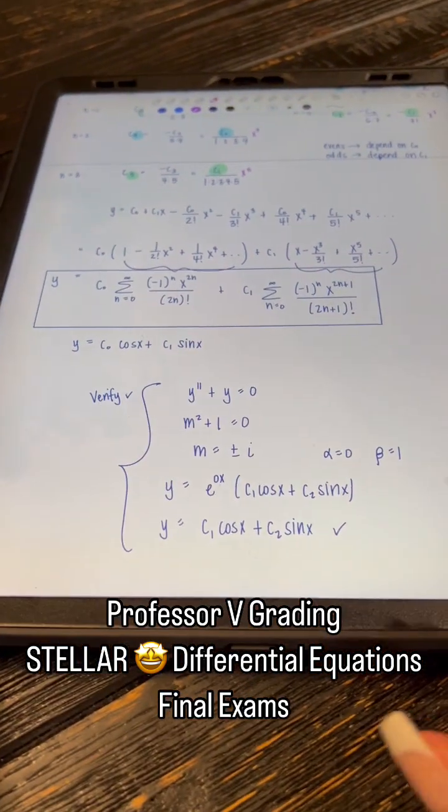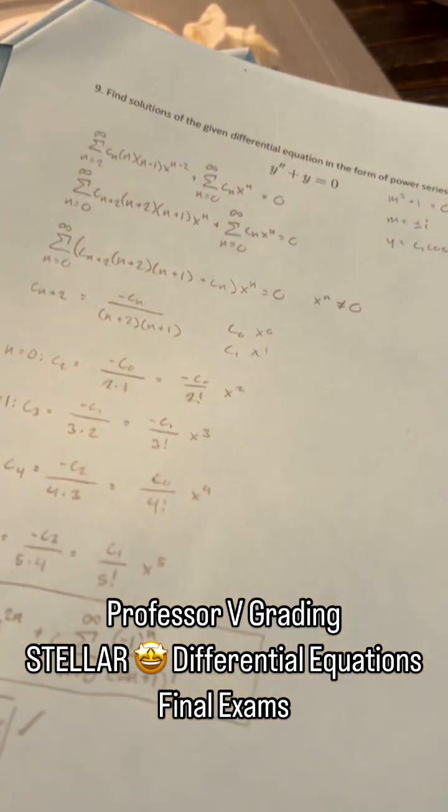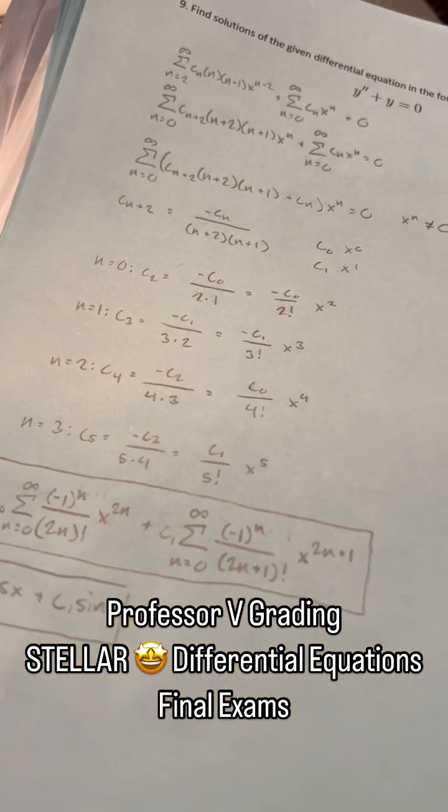Here's the answer key, I always have it right here off to the side. I grade one problem at a time, that way I'm really consistent with partial credit.